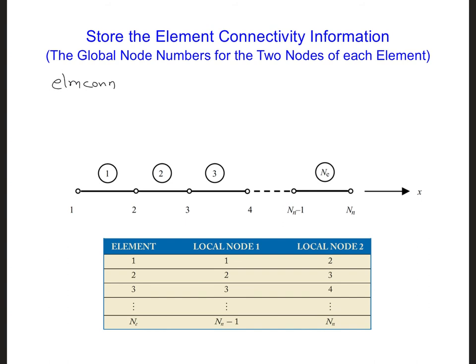The first index will correspond to the element number, and the second index will correspond to the element node number for that element, ranging from 1 to 2, since there's only two nodes per element.